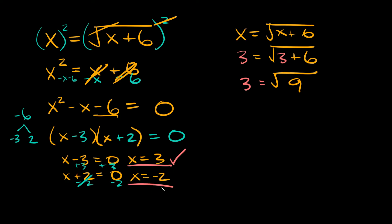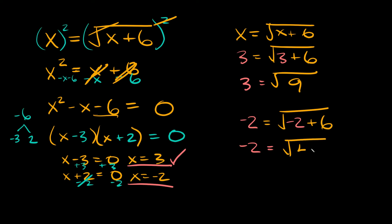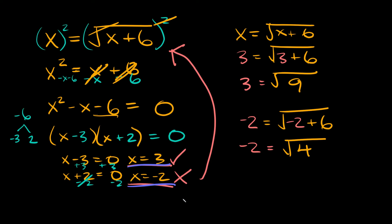Now let's check x equals negative 2. Plugging it in: negative 2 is equal to the square root of negative 2 plus 6, which is the square root of 4. Is this a true statement? Is negative 2 equal to the square root of 4? No — the square root of 4 is positive 2, not negative 2. So negative 2 is not a solution. Whenever you get a solution that doesn't work in the equation, that's called an extraneous solution. So x equals 3 is the real solution and x equals negative 2 is extraneous — this equation has only one solution: x equals 3.